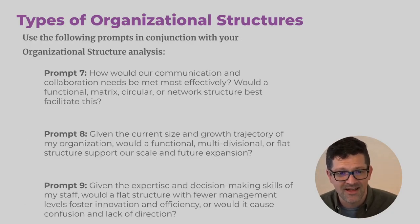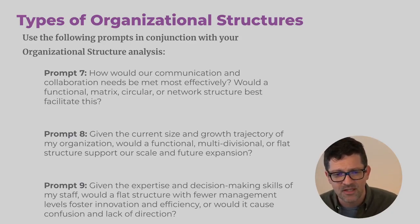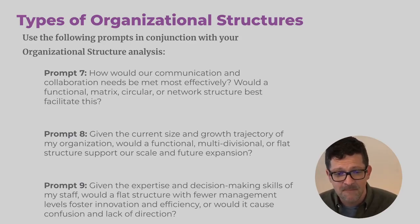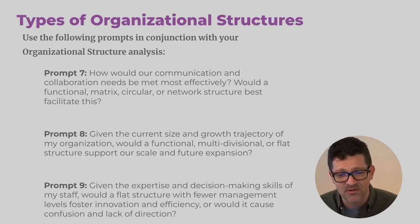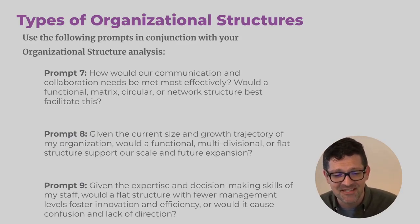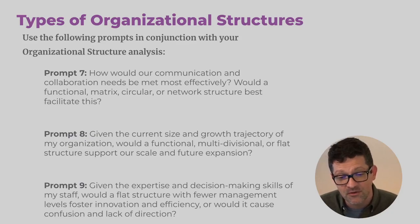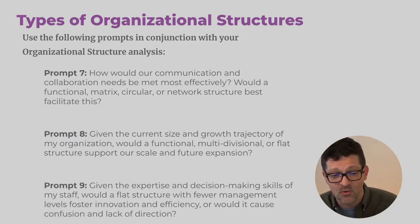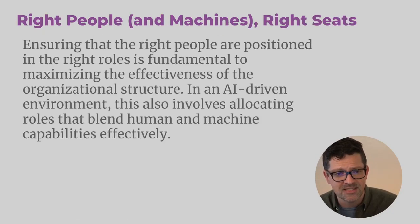Here are some prompts for analyzing this. Prompt seven: How can our communication and collaboration needs be met more effectively? Would a functional, matrix, circular, or network structure be best to facilitate this? Prompt eight: Given the current size and growth trajectory of my organization, would a functional, multidivisional, or flat structure support or scale our future expansion? Prompt nine: Given the expertise and decision-making skills of my staff, would a flat structure with fewer management levels foster innovation and efficiency, or would it cause confusion and lack of direction?